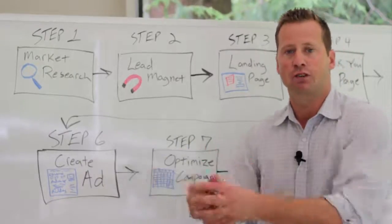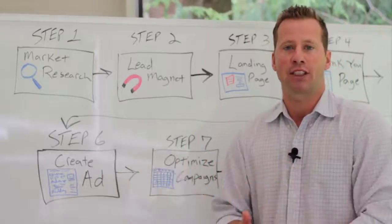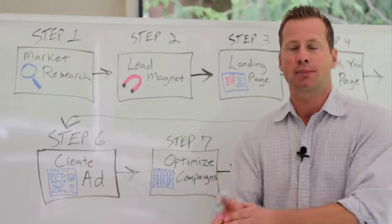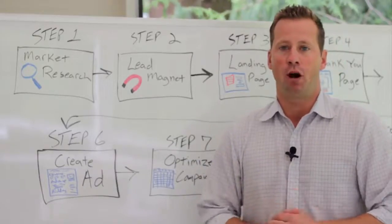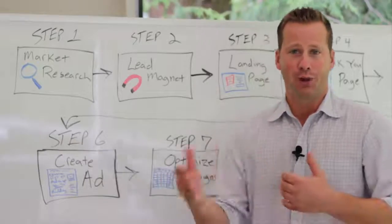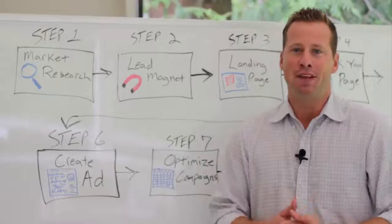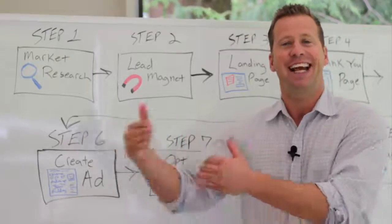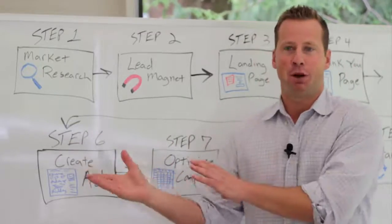Then we use email marketing and retargeting to nurture them along and eventually bring them into our sales funnel to sell them a product or service. We want to use Facebook for that initial first date — gather that lead, and once we have that person in your database, deliver more value, more education, and let them get to know us before we try to sell them. You don't want to walk up to someone and ask them to marry you right away — it's a process. Facebook is social; people are not on Facebook searching for a solution like they are on Google.